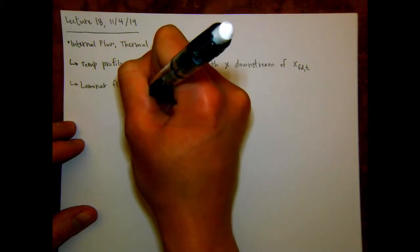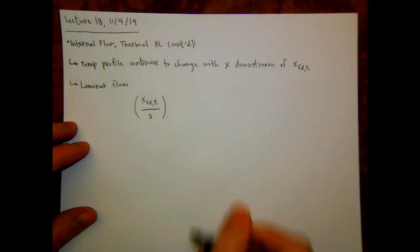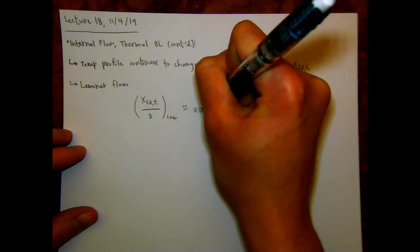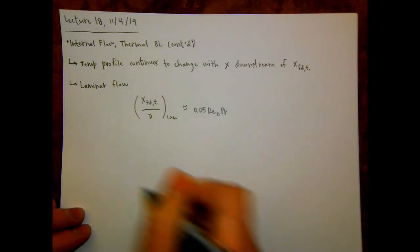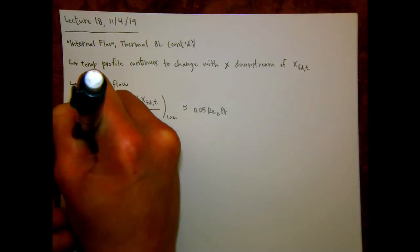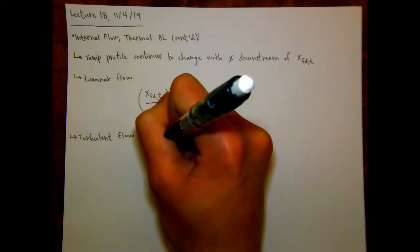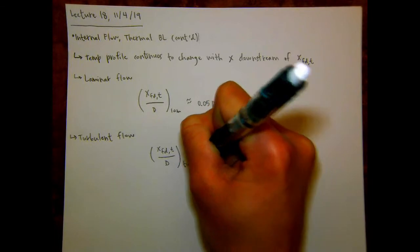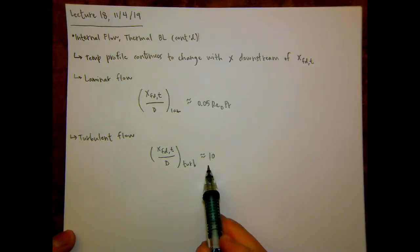For laminar flow, the thermal entry length is approximately equal to 0.05 times the Reynolds number times the Prandtl number, and we express it non-dimensionalized by the diameter. And then for turbulent flow, it's the same as the velocity boundary layer — so approximately 10 diameters is where the thermal boundary layer becomes fully developed.